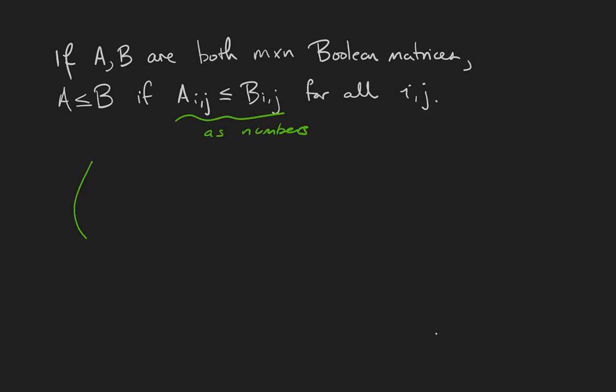For example, let's look at the matrix 1 0 1 1 0 1 and the matrix 1 1 1 1 0 1. Since the right-hand matrix never has a 0 where the left-hand matrix has a 1, this less than or equal to relationship is satisfied.